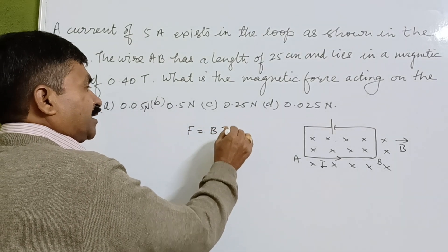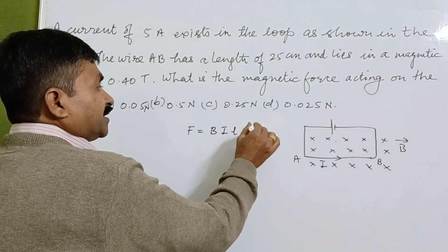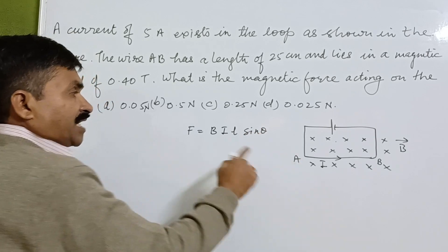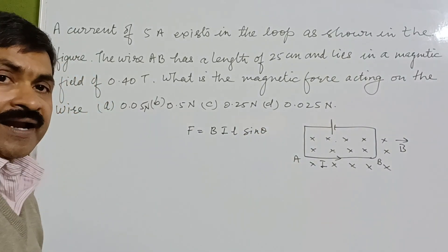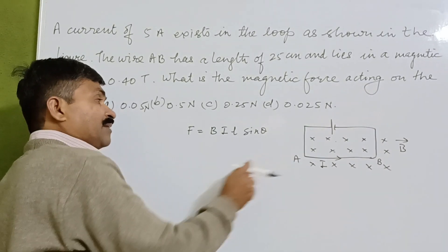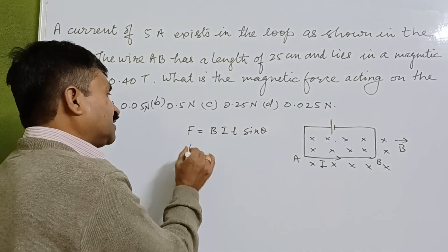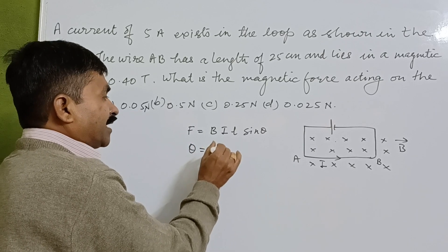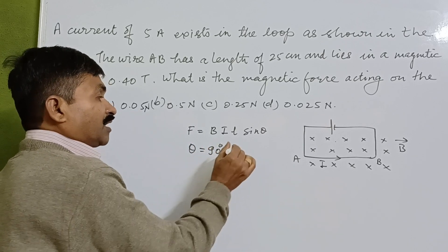To calculate the magnetic force, we use the formula F = B × I × L × sin(θ), where θ is the angle between the magnetic field and the direction of the current.